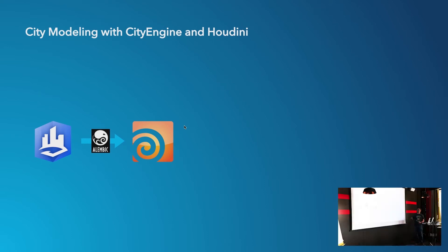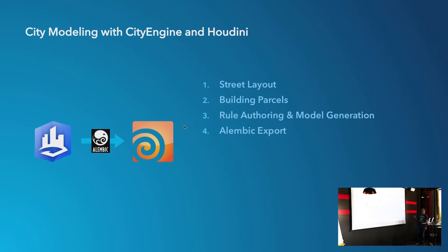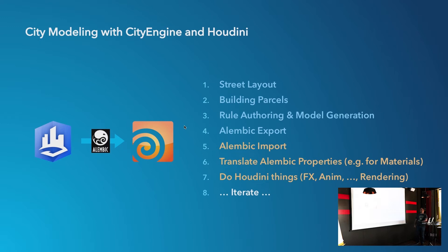I'd like to focus on this special tandem: CityEngine and Houdini. CityEngine handles the narrow task of creating city models and Houdini handles all the rest. In between, we have Alembic — a modern VFX format for transporting data. Usually you do your street layouts, buildings, and CGA rules, then export to Alembic. Then you have the mirror step in Houdini: you import it and translate all the Alembic information — CGA reports, generic attributes, all the metadata besides the geometry — into Houdini semantics so you can actually do Houdini things afterward.